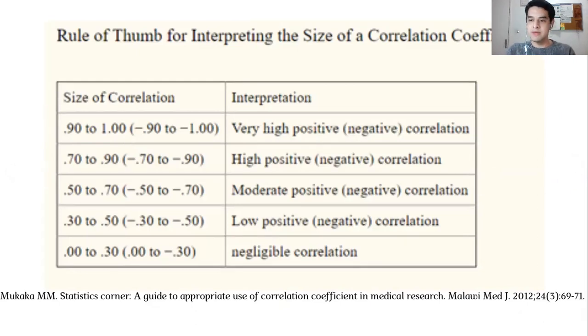The closer to zero, the weaker the correlation, and there will be no association between the two continuous variables.